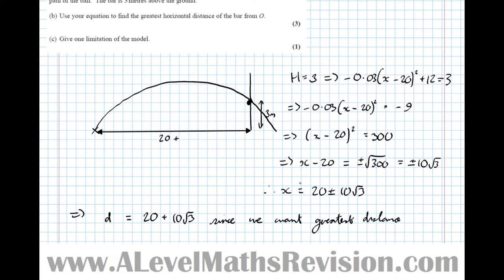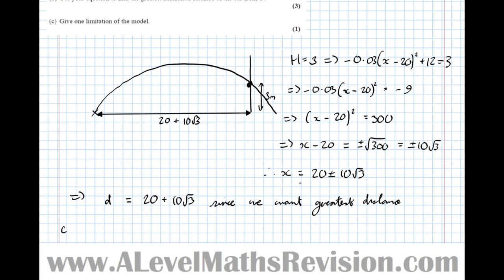So that distance there, 20 plus 10 root 3 is what we've just worked out. So that's that part. So part C give one limitation of the model.